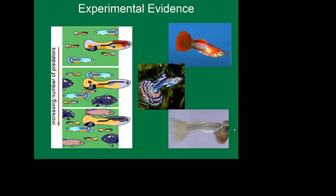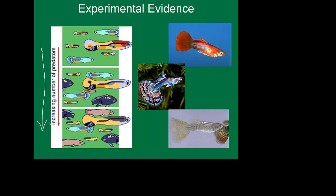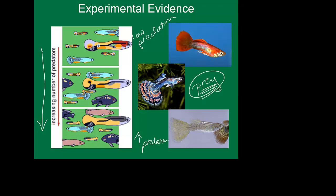We'll also look at experimental evidence associated with evolution. An increasing number of predators — high predation — can actually change how a prey item looks. If all of these guppies are prey items, it means something else wants to eat them. If you want to hide from a predator, you're not going to be big and flashy — you're going to try to blend into your environment. We'll look at how this all ties into natural selection.